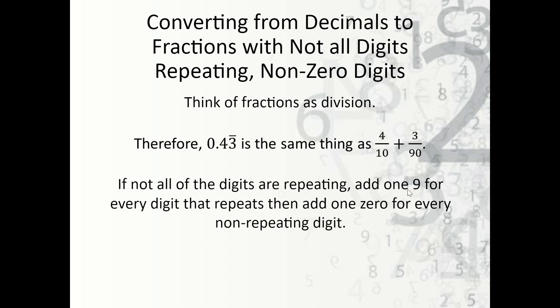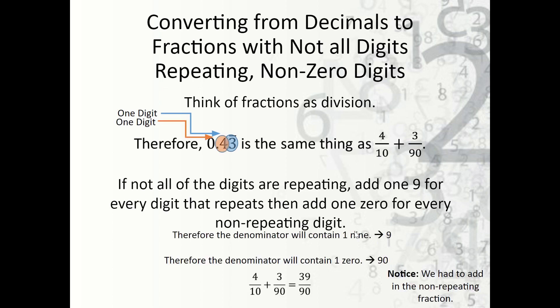If not all the digits are repeating, add one nine for every digit that repeats and one zero for every non-repeating digit. One digit repeats — that becomes a nine; one digit is not repeating — so we get three over 90 and four over ten. Multiplying top and bottom of four over ten by nine gives 36 over 90. Then 36 plus 3 is 39, so it's 39 over 90.